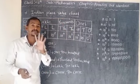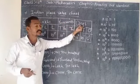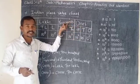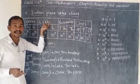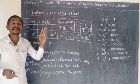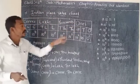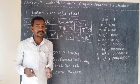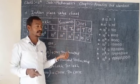The 4 groups are: the 1s group, the 1000s group, the lakh group, and the crore group. In every group, there are some places.